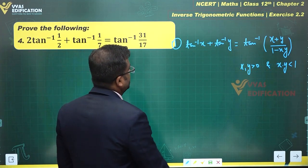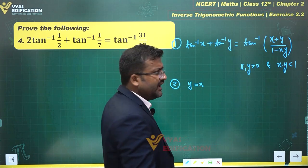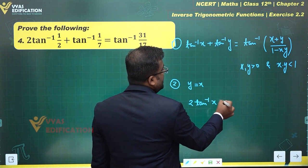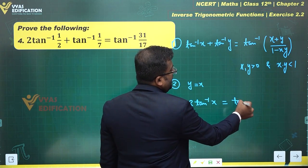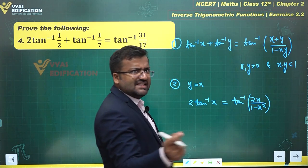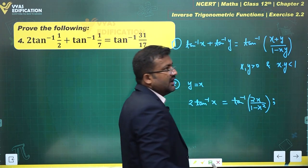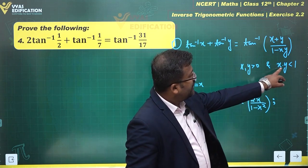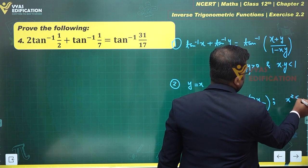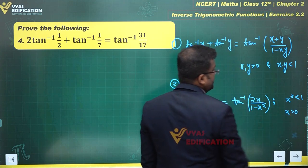One more result based on this: when x and y are equal, that is y equals x, we have another result. This becomes tan inverse x plus tan inverse x, which is 2 tan inverse x, equal to tan inverse of 2x over (1 minus x squared). This is another result given in NCERT itself. What is important here is that the product xy, that is x squared, must be less than 1.